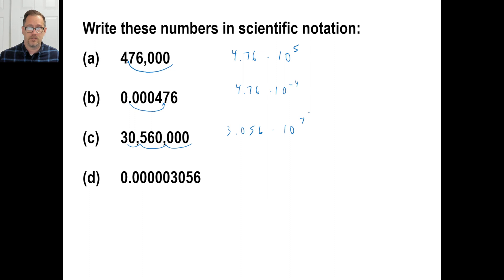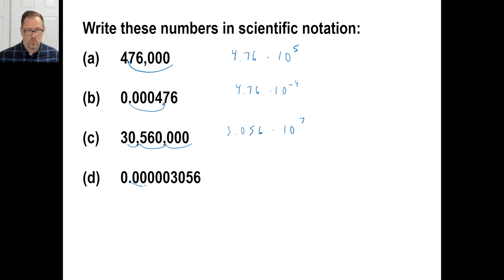Now look at problem D. Just looking at it, you can tell it's a tiny, tiny number, so the exponent is going to be negative. We count the places: 1, 2, 3, 4, 5, 6 — just 6. So the answer is 3.056 times 10 to the negative 6th. There we go.